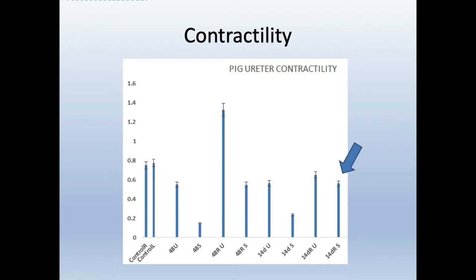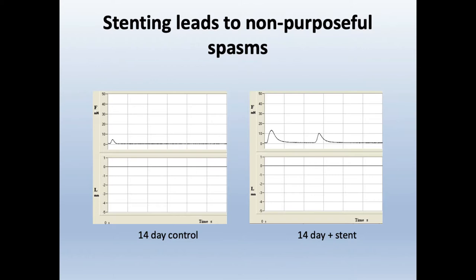Those stents were in for 14 days, removed, and the pigs were kept without stents for a week before harvest. The question raised was whether we studied contractility with partial obstruction without a stent, to know if it's the presence of the stent versus obstruction causing the changes. We have an internal control with the contralateral unstented ureter. We do have some data with a partial obstruction model in mice, but that was not done in this study.